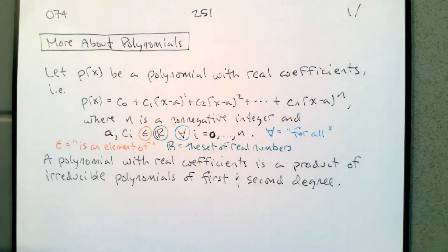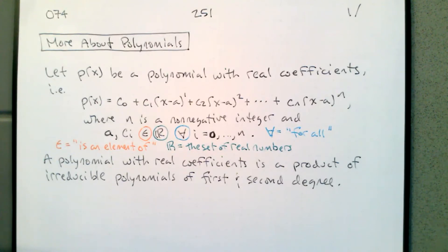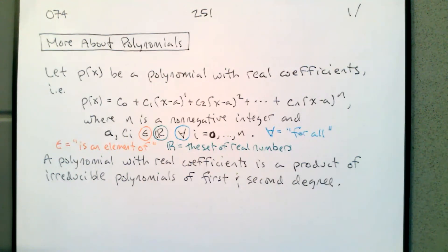A polynomial with real coefficients is a product of irreducible polynomials of first and second degree. This is why we study so much about quadratics and then kind of stop — we don't go separately into cubic polynomials. Cubic polynomials will just be the product of either three first-degree polynomials, or a first-degree and a second-degree polynomial. A fourth-degree polynomial will be the product of two second-degree polynomials, a second and two firsts, or four firsts.